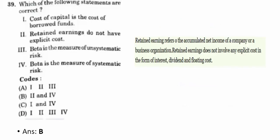Thirty-ninth question: which of the following statements are correct? The correct option is B — two and four: retained earnings do not have explicit cost, and beta is a measure of systematic risk. Retained earnings refers to accumulated net income and does not involve any explicit cost in the form of interest, dividend, or floating cost.